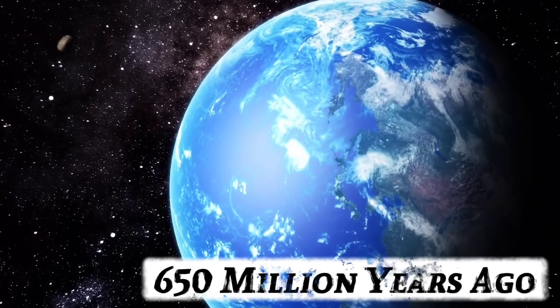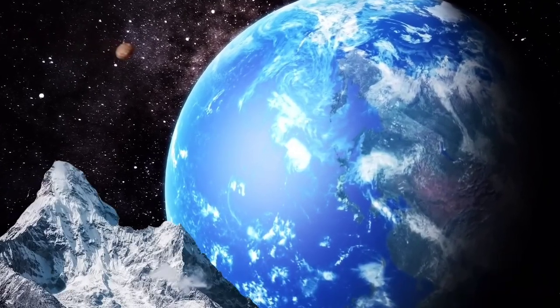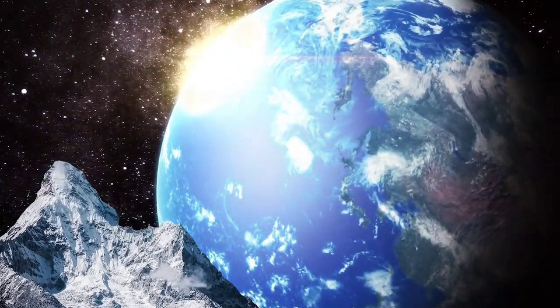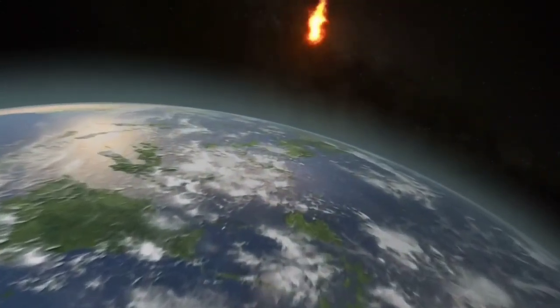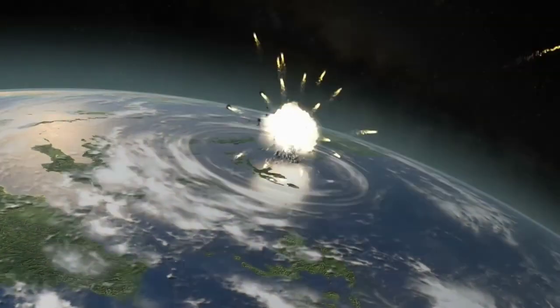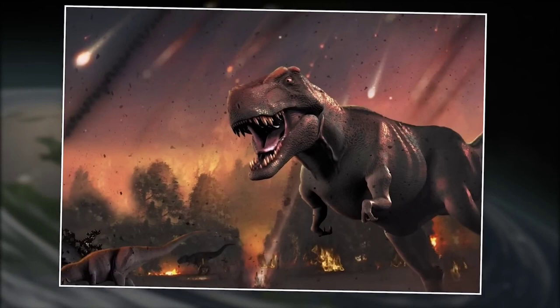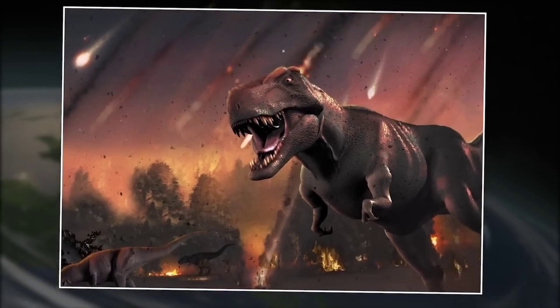Around 650 million years ago, a massive asteroid similar in size to Mount Everest crashed into our planet. This asteroid, covering an area of 10 kilometers, caused significant changes to the Earth's surface. It was such a catastrophic event that it led to the extinction of the dinosaurs.